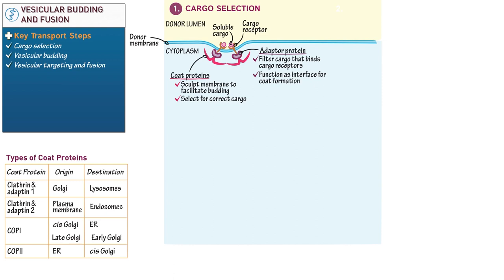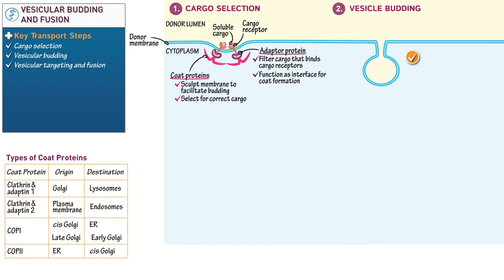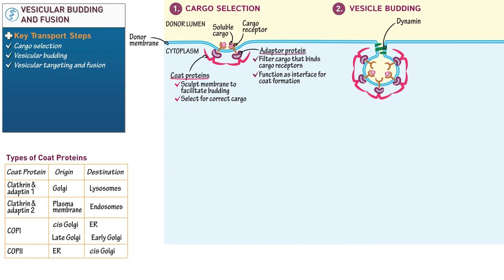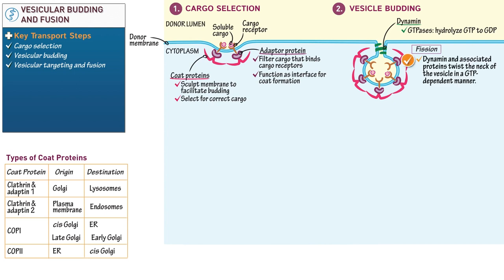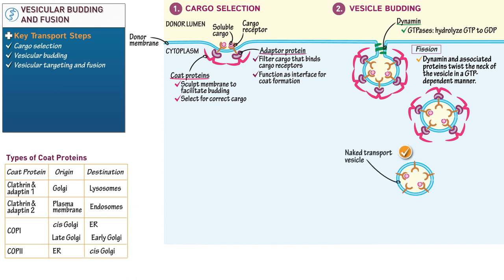Now that we've introduced the diversity of coat proteins within the cell, let's illustrate step 2 of vesicular formation: vesicular budding. Extend the donor membrane to illustrate this step, but this time with a more dramatic inward bulge. Again draw cargo in the lumen and cargo receptors that bind a membrane scaffold on their cytoplasmic side. Now draw an additional protein that spirals around the neck of the budding vesicle and label it dynamin. Write that dynamin family proteins are GTPases, which hydrolyze GTP to GDP. Via fission, dynamin and associated proteins twist the neck of the vesicle in a GTP-dependent manner, which pinches off the vesicle from the donor membrane. Now draw the vesicle suspended in the cytoplasm, and below it draw a naked transport vesicle that has shed its coat and adapter proteins. These external proteins dissociate from the vesicular membrane after fission occurs.